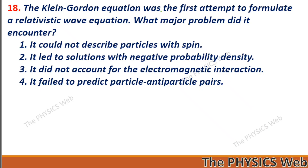Next: the Klein-Gordon equation was the first attempt to formulate a relativistic wave equation. What major problem did it encounter? It led to solutions with negative probability density. So, two is your correct option.